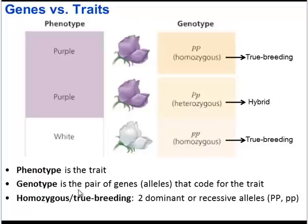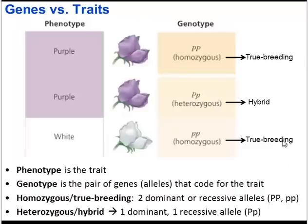Important terms: homozygous, also known as true breeding, is when there are two dominant or two recessive alleles. Heterozygous is when there's one dominant allele and one recessive allele, also known as a hybrid. In order to predict and explain why certain traits are inherited the way they are, you have to be able to determine the genotypes of gametes as well as the genotypes of the parents.